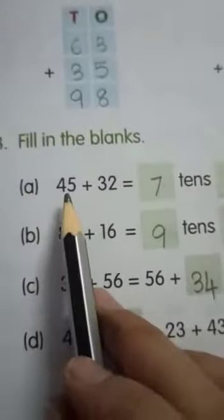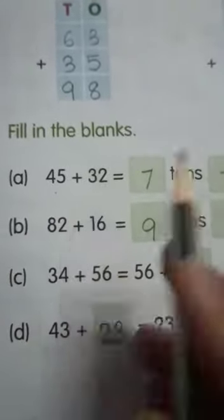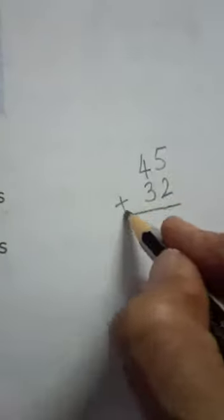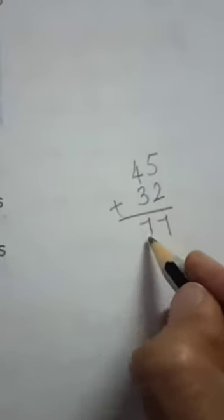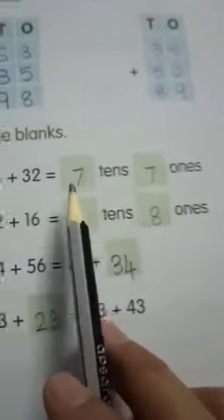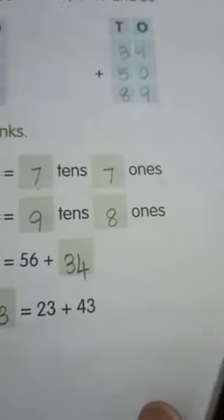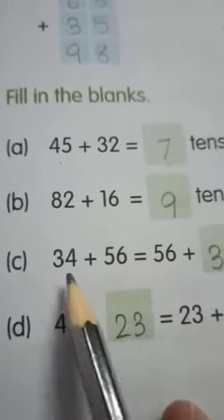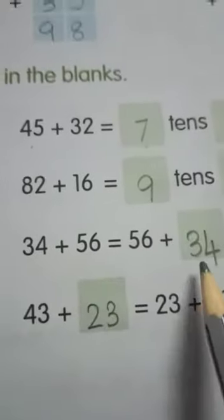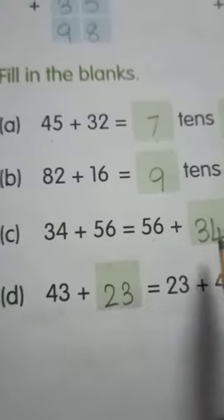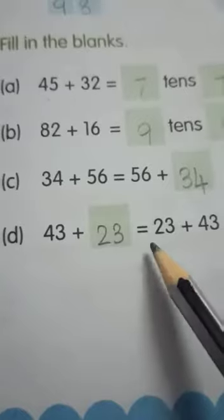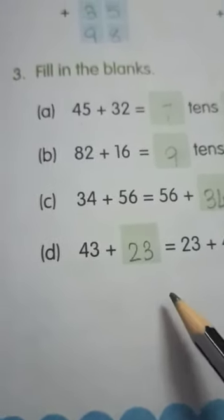Now, we have to add 45 and 32. 5 plus 2 is 7, and 4 plus 3 is 7. So both on the ones and tens place, we have 7. Write 7 on the tens place and 7 on the ones place. Next, you can see 34 plus 56 — here we are changing the order, writing 56 first and then 34. Similarly, 43 plus 23 can be written as 23 plus 43. Here we are changing the order of addends.